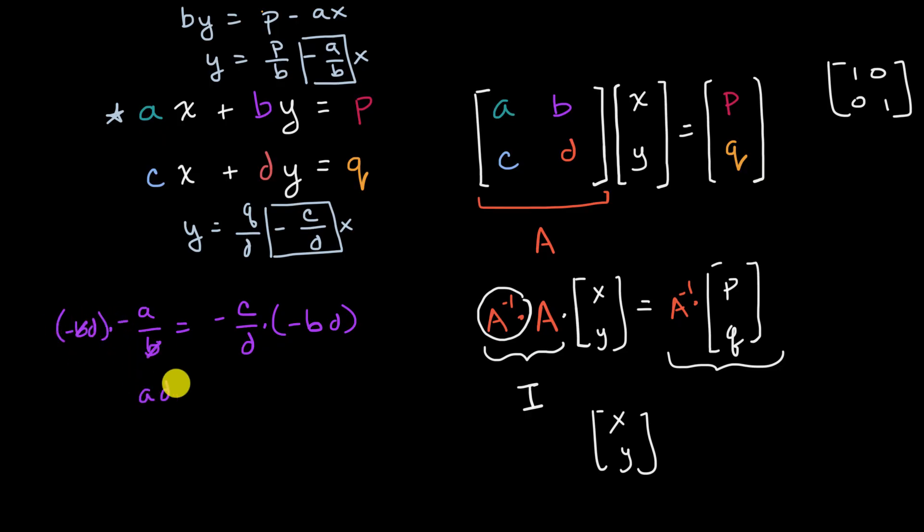Negative times a negative is a positive. We're going to get a, d. And on the right-hand side, negatives cancel out, d goes away, and then you have c, b.